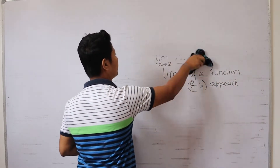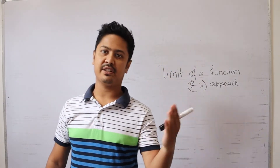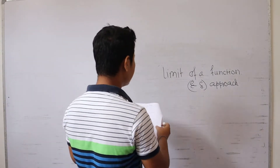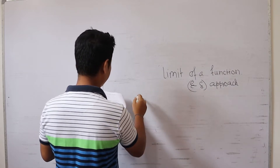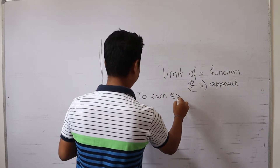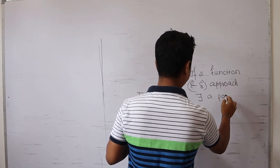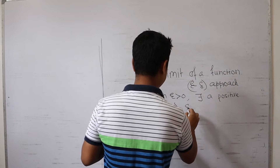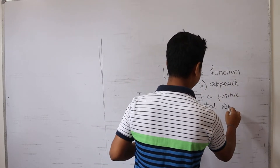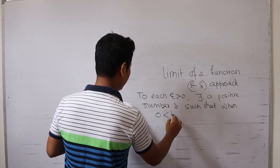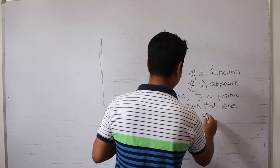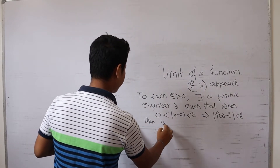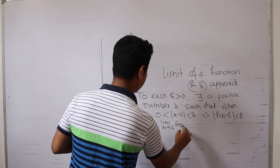Let's first write the definition of limit of a function. For every epsilon greater than 0, there exists a positive number delta such that when 0 is less than mod of x minus a is less than delta, this implies mod of f of x minus l is less than epsilon. Then limit x approaches to a of f of x equals l.